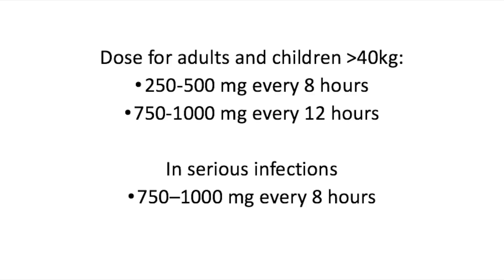For oral use — tablets or suspensions — the usual dose for adults and children weighing more than 40 kg is 250 to 500 mg every 8 hours, or 750 to 1000 mg every 12 hours. In serious infections, these dosages can be increased to 750 to 1000 mg every 8 hours for 10 days. If you forgot a dose and it's less than 4 hours until your next dose, just skip it and take that dose at the end of your treatment.